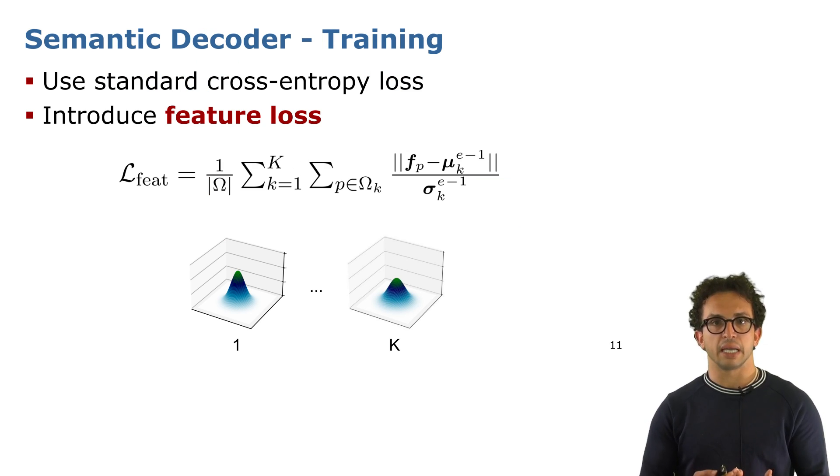The semantic decoder aims for semantic segmentation, so it uses the standard cross-entropy loss, which is the gold standard for semantic segmentation. But we pair it with another loss function, the feature loss function.